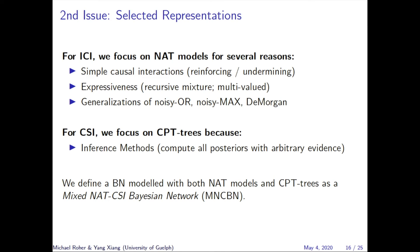The second issue is the selected representation for each local model. For ICI, we focus on NAT models for several reasons: their ability to encode both reinforcing and undermining interactions, their expressiveness as they can be recursively mixed and encode multi-valued variables, and they generalize other ICI models including Noisy-Or and Noisy-Max while having the same linear space. On the other hand, we focus on CPT trees for CSI because we wish to compute posteriors of all unobserved variables with arbitrary evidence at inference runtime. Inference methods designed for CPT trees support this requirement, while those designed for other CSI local models such as rule bases and algebraic decision diagrams do not.